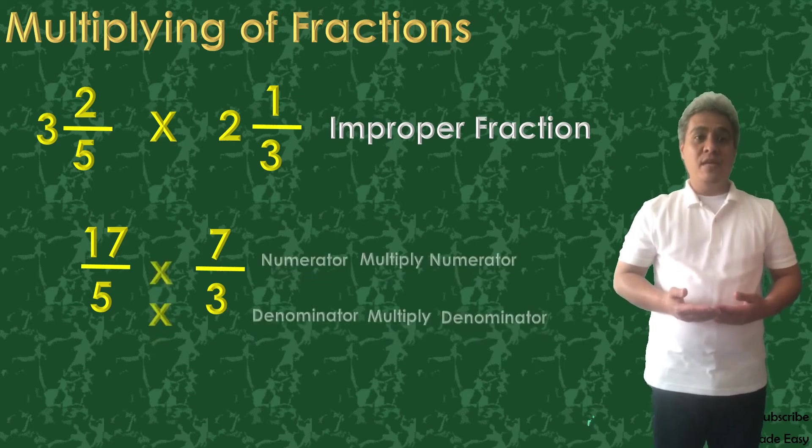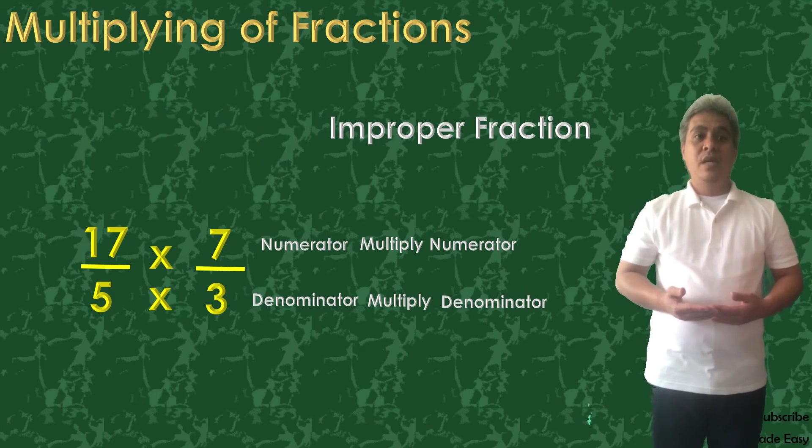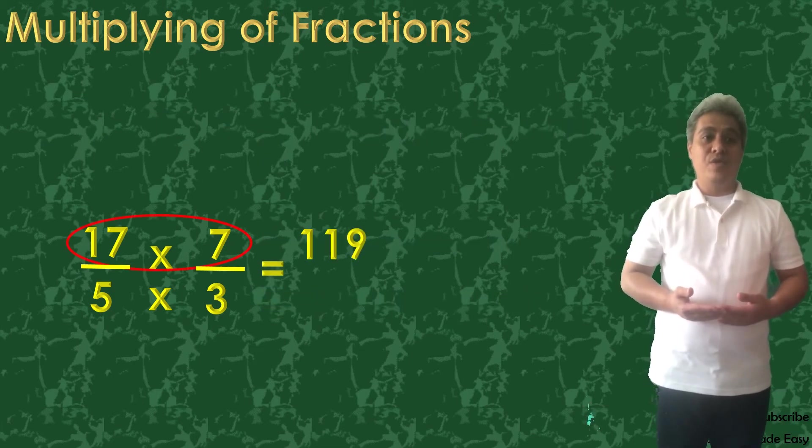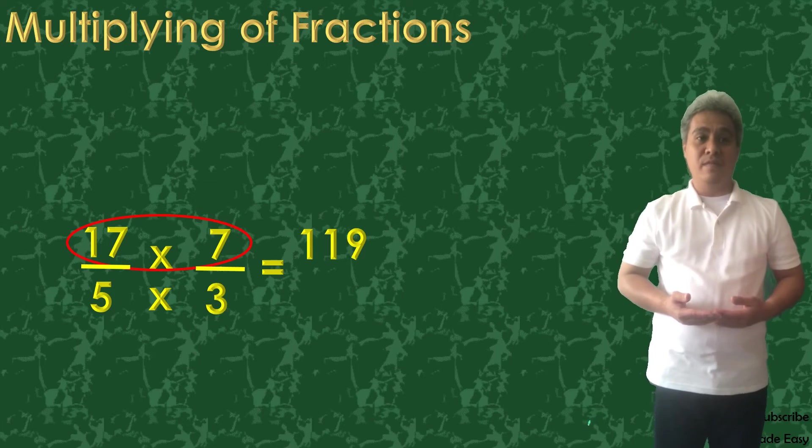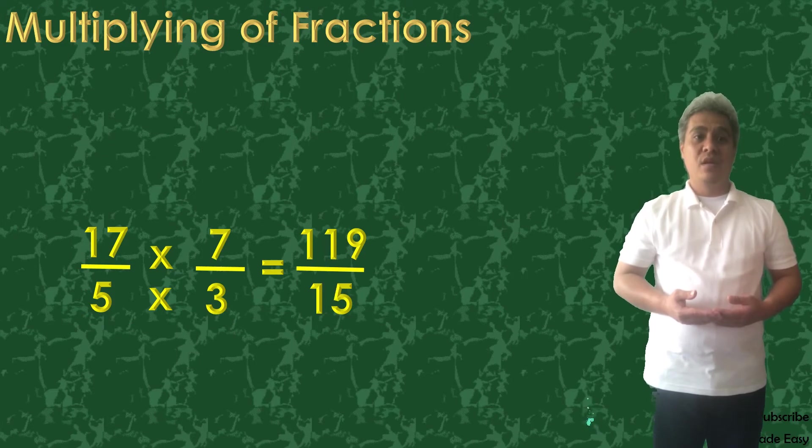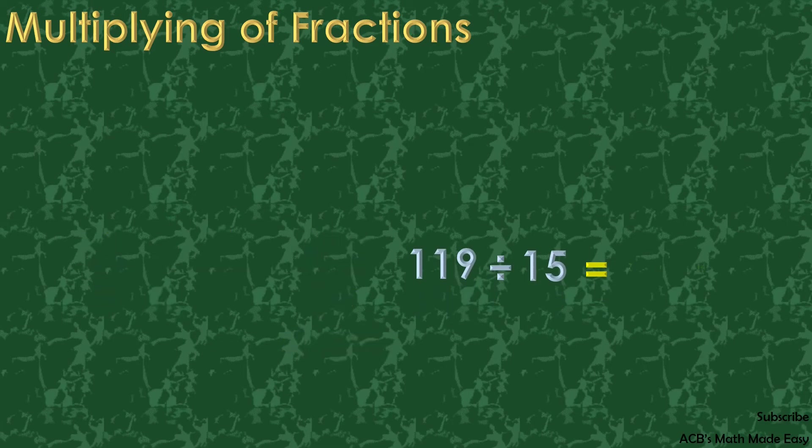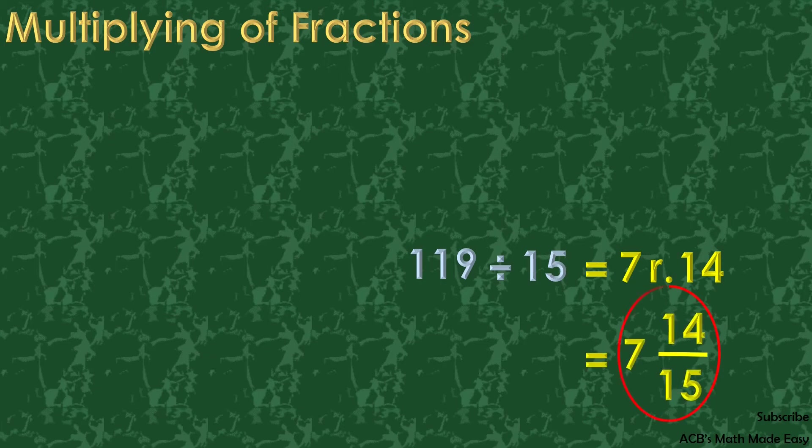We can now multiply the numerators and the denominators. We can now convert by dividing 119 by 15. And the answer is 7 remainder 14. So our final answer is 7 and 14 over 15.